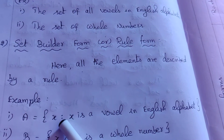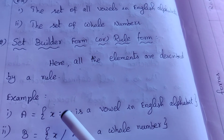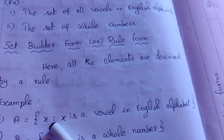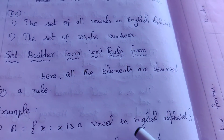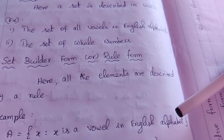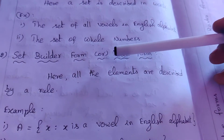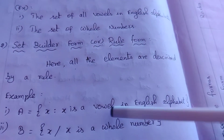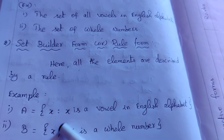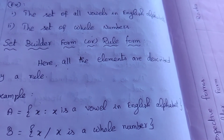...set of all x, such that — using a dot or slash symbol — x is a vowel in English alphabet. This is the rule form. Another example: set of all x such that x is a whole number. This is the set builder form.